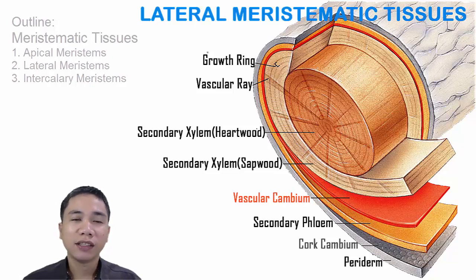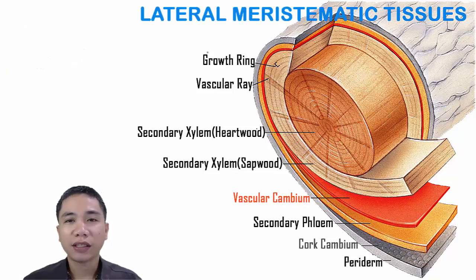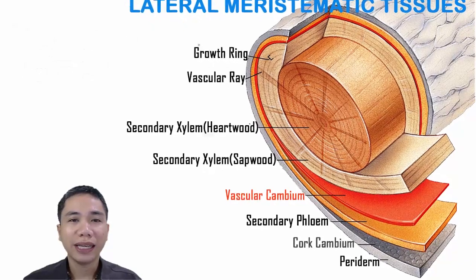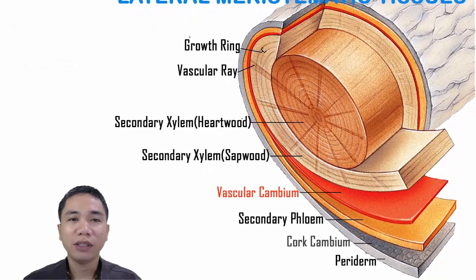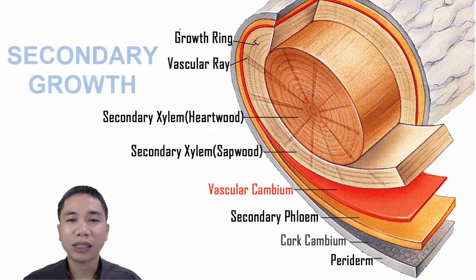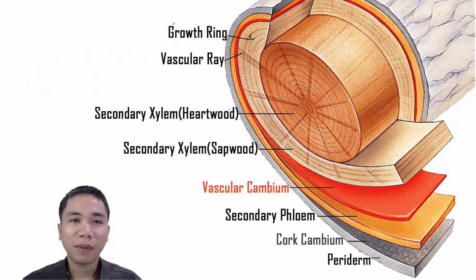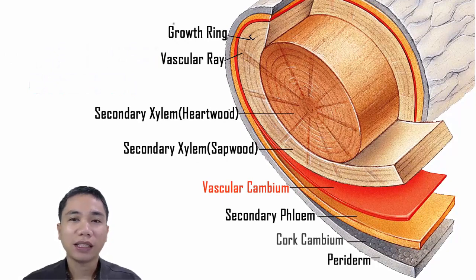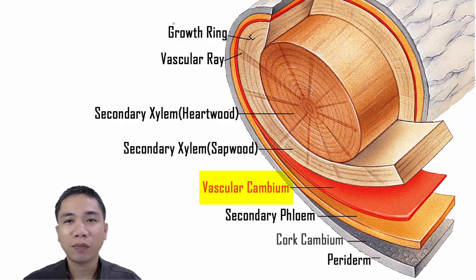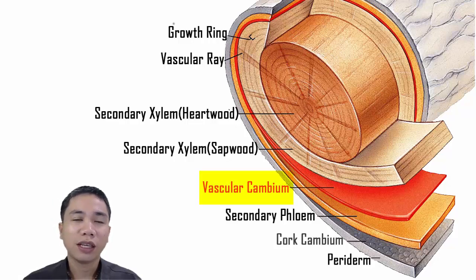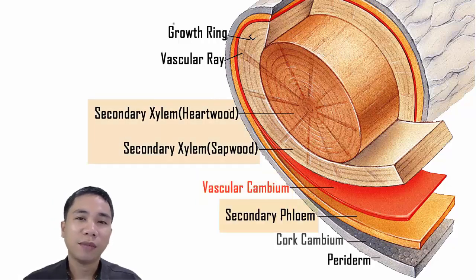As cells are being produced by these lateral meristem tissues, the plants start to increase in girth — which is usually referred to as secondary growth. Two types of lateral meristems are observable in flowering plants. The vascular cambium produces secondary tissues that function primarily for support and conduction, such as the xylem and the phloem.